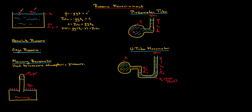Two important terms are absolute pressure and gauge pressure. Pressure can be reported in either form. Absolute pressure is measured relative to a perfect vacuum. Gauge pressure, on the other hand, is measured relative to the local atmospheric pressure — that is, it tells us how much above or below the local atmospheric pressure a given fluid pressure is.